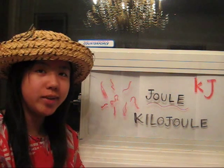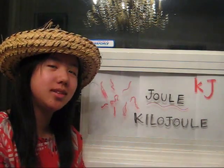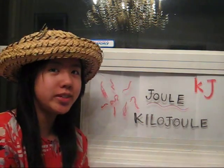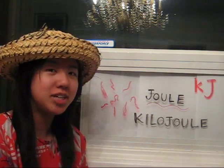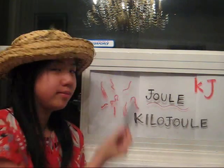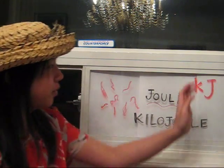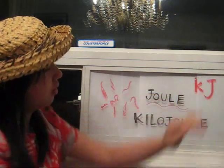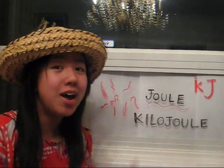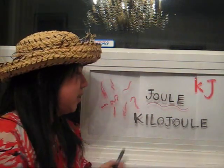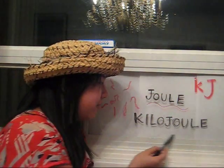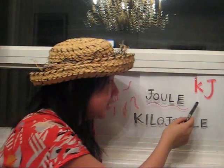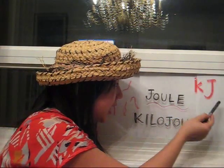Before we get to kilojoules, let's first look at what a joule is. A joule is a unit of measurement for energy, and the symbol for it is J. When we have a thousand joules, we then have a kilojoule, which is expressed as KJ.